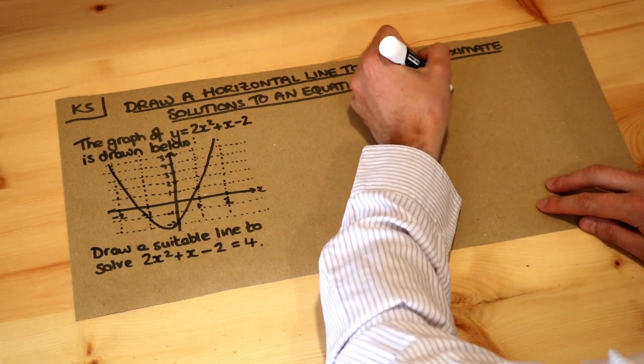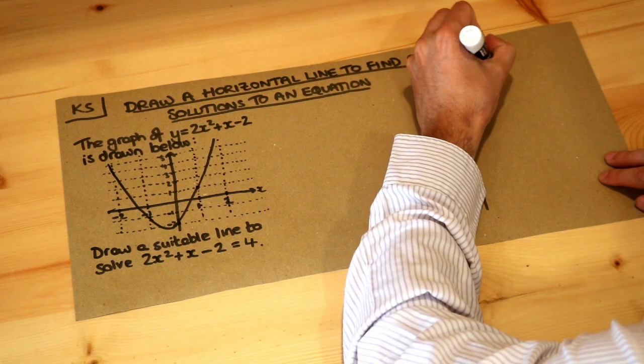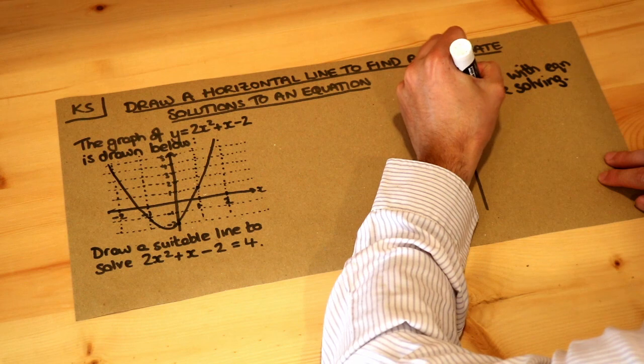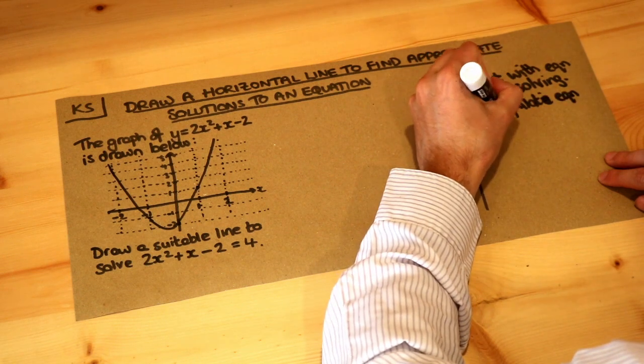Let me explain the general method. You would first start with the equation you're trying to solve. You would secondly manipulate the equation until you see the graph equation on one side.